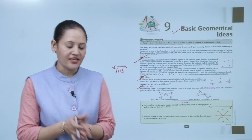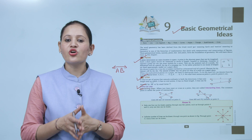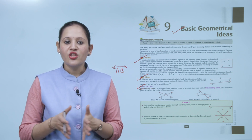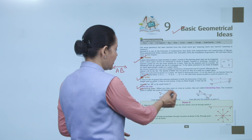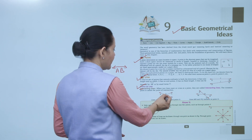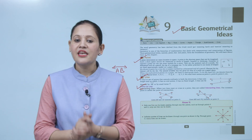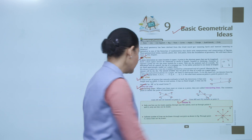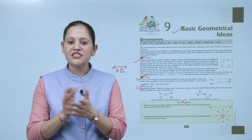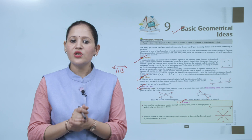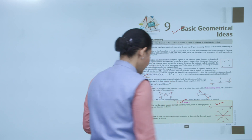Next is types of lines. First is intersecting lines. When two lines meet at a point, they are called intersecting lines. The common point is called the point of intersection. Note: only one line can pass through any two given points — through points P and Q, only one line can be drawn.